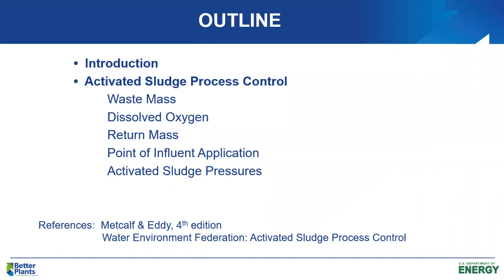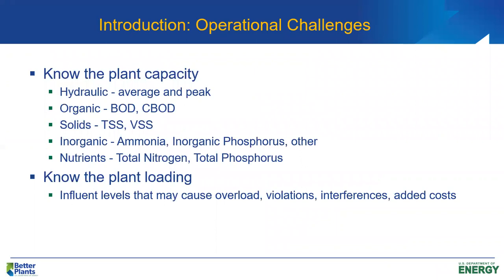We're going to go through some introductory slides to introduce the topic today, and then we'll get into the ways we actually control the process — how we apply what we call pressure to the process to get it where we want it to be. When we talk about controlling the activated sludge process, we basically mean we're trying to make the sludge manageable so that we produce effluent quality that consistently meets our NPDES effluent permit requirements. That's our main goal: to have a sludge that is manageable and that produces excellent effluent quality.